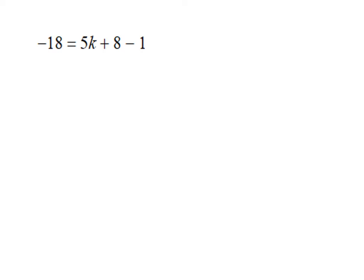The first thing we need to do to solve this example is simplify both sides of the equation. The left side is already simplified. On the right side we have 5k, which is the only k term, and 8 minus 1. We can combine 8 minus 1, so it becomes: negative 18 equals 5k plus 7.